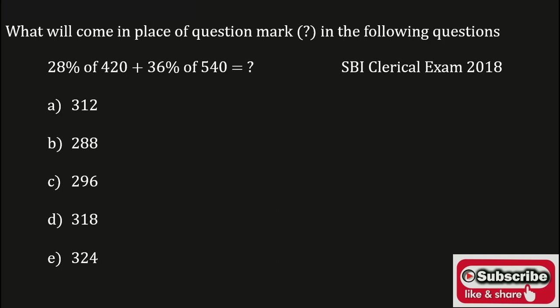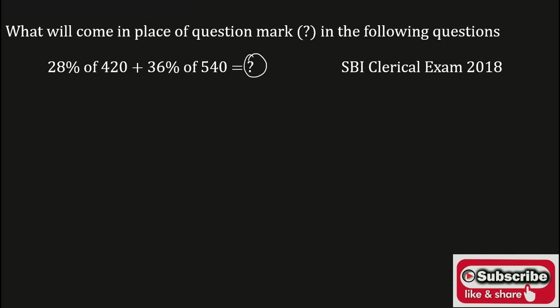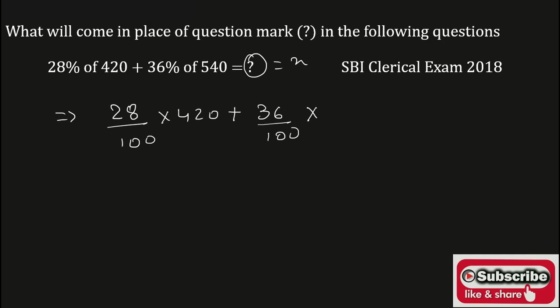The given question: 28% of 420 plus 36% of 540 is equal to what? In place of the question mark, consider it as equal to x. Now 28% of 420 is 28 upon 100 into 420, plus 36% is 36 upon 100 into 540, is equal to x.